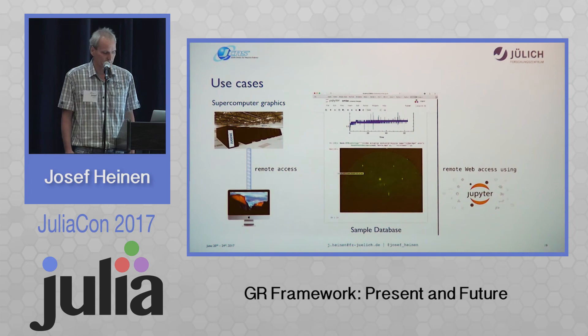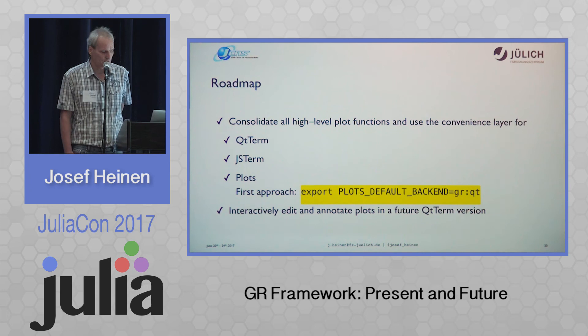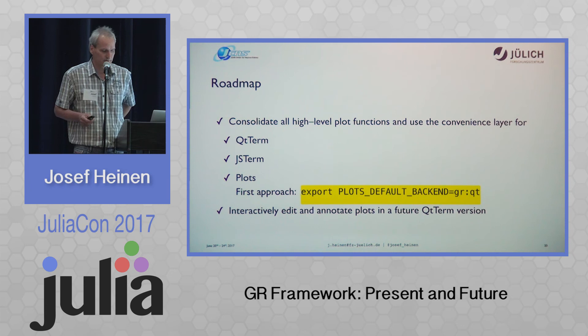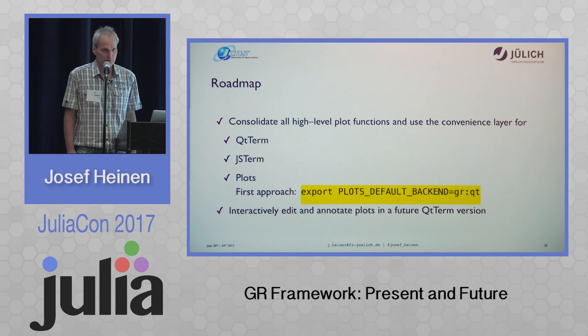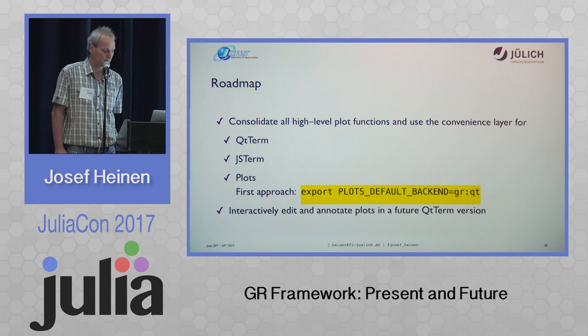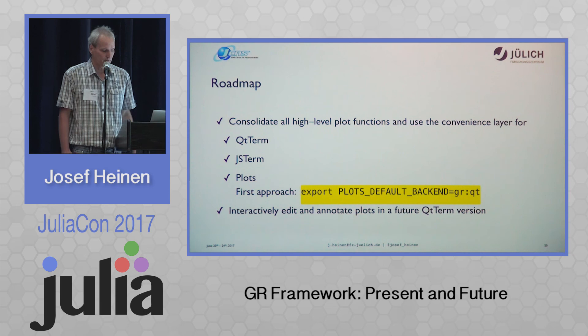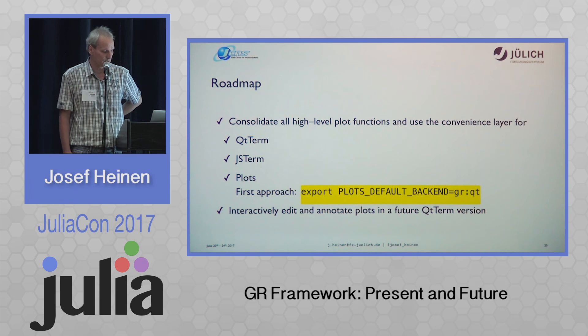What's the roadmap? We want to consolidate all our high-level plot functions and use a convenience layer for that. Right now there is a lot of duplicated code — for example in the Plots backend or in the GR MATLAB backend — and we want to consolidate that into one module written in C. This will provide even more speed, and in the first approach we will make this module available using the Plots default backend environment and specify the desired backend with a QT specifier.